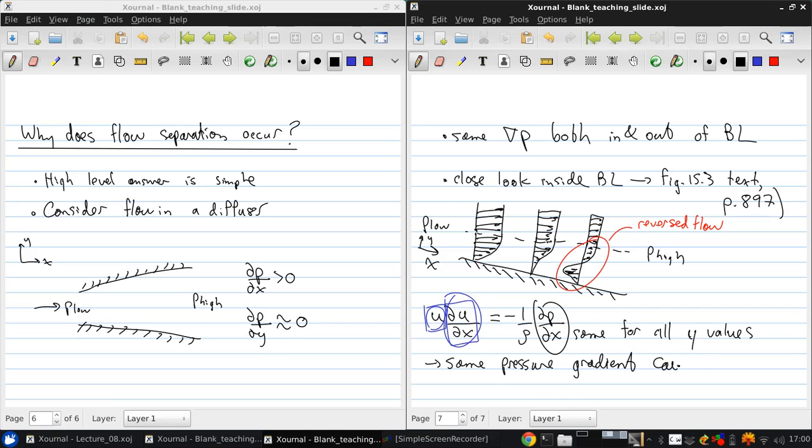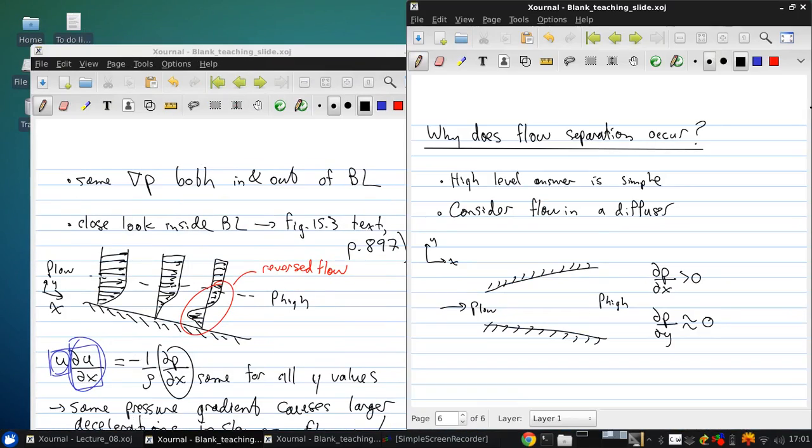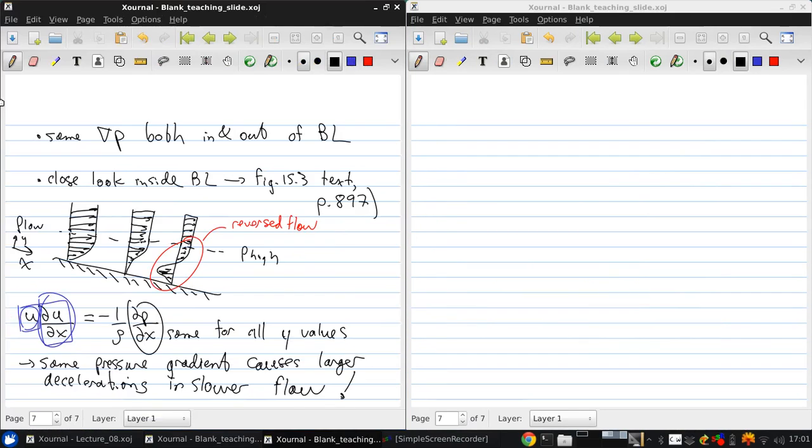We can say that the same pressure gradient causes larger decelerations in the slower flow. Basically, this pressure gradient starts causing a flow reversal in the boundary layer long before the flow in the mainstream has slowed down to zero speed. This is an unstable situation, and this is what results in flow separation.